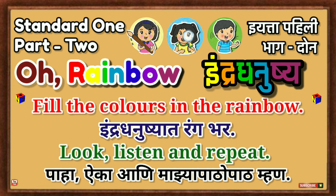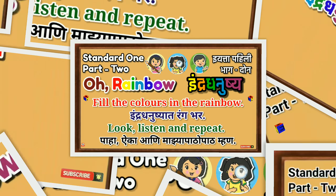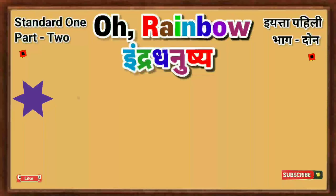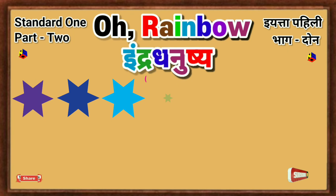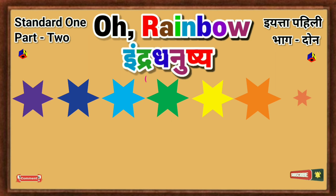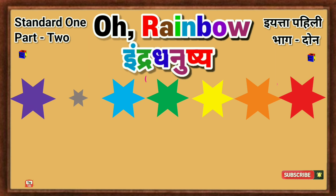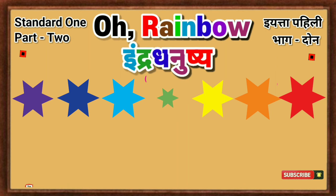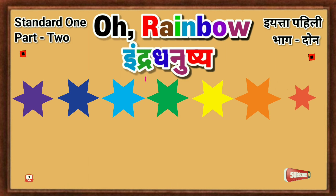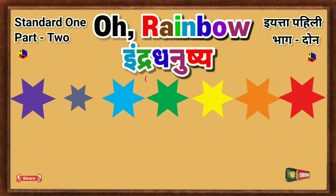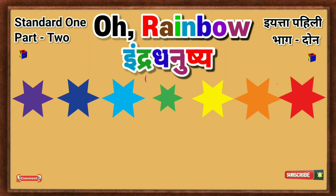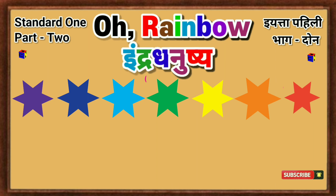Paha Aikani Majha Pathopathaman. Students, you have recited the poem 'Oh, Rainbow' by singing it over and over again. Today we will learn the names of colors in this poem. Identify the colors of stars appearing on the board. Listen to the English words and pronunciation of colors and say them after me.